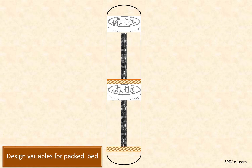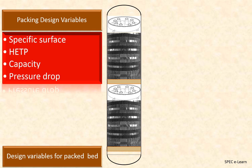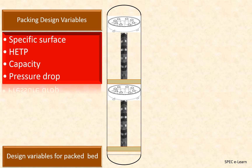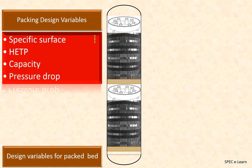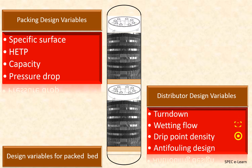Packed column performance is influenced by two important elements: packing and distributors. The design variables for packing are specific surface area, height equivalent of theoretical plates, capacity, and pressure drop. The design variables for distributors are turndown, wetting flow, drip-point density, and deflector design.